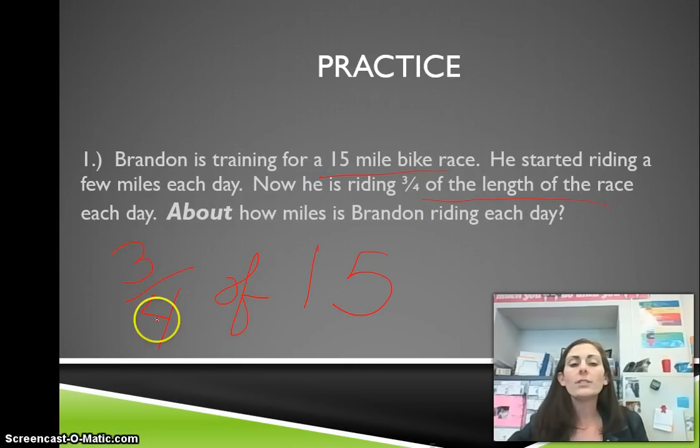If you remember, we have three-fourths of the length of the race. Well, the length of the race is 15 miles. So three-fourths of 15. And remember, it says about, so that means we want to estimate.